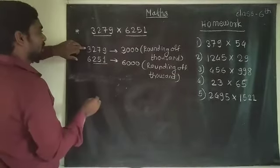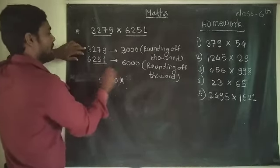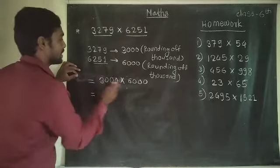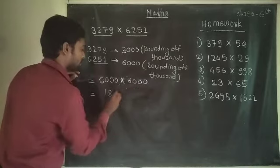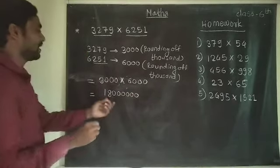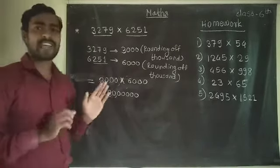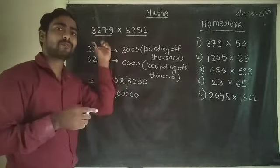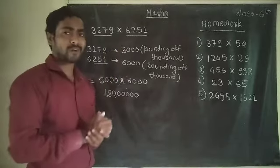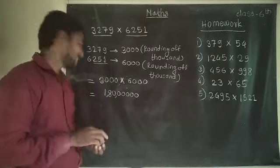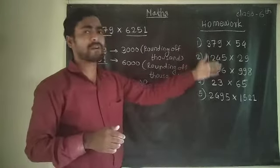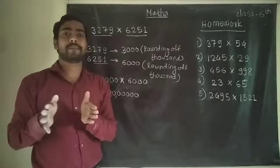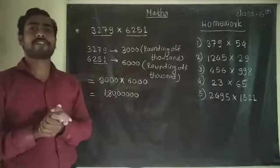Then we multiply 3,000 by 6,000. Six times three is eighteen, and there are six zeros total, giving 18,000,000 — eighteen lakh. The rule is: whichever is the highest place in the number, find the rounding off for that place. If the highest place is tens, do rounding of 10; if hundreds, rounding of 100; if thousands, rounding of 1000. Then do the multiplication. This is a very simple topic. Solve all the examples given — five examples are your homework. Today we stop here. Thank you all very much.